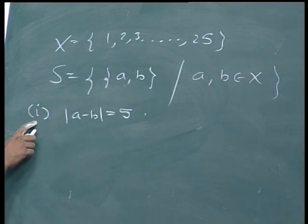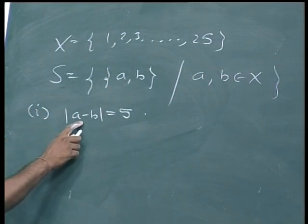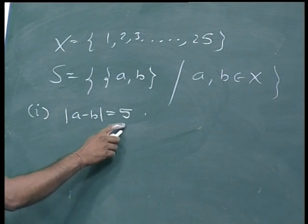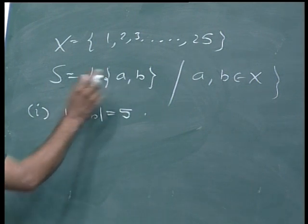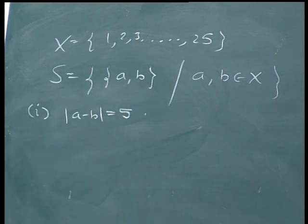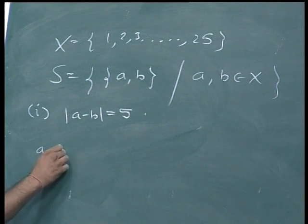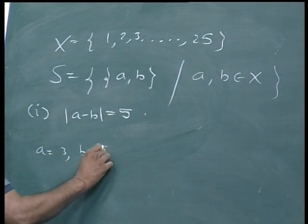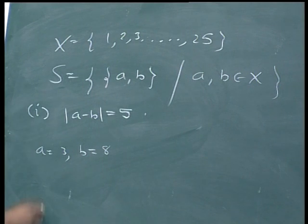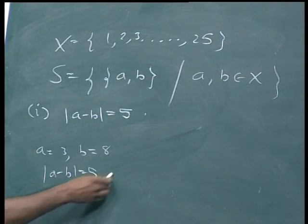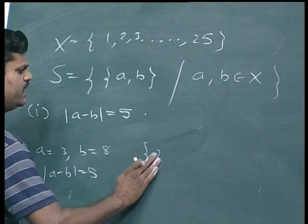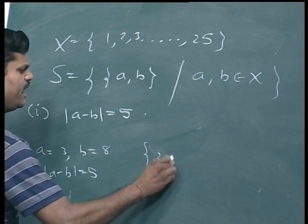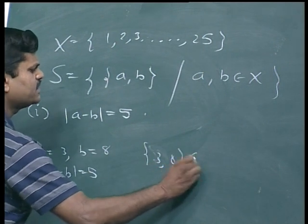For the first problem, the condition is mod of a minus b is equal to 5 — that is, the absolute difference between these two numbers is 5. For example, if I take a equal to 3 and b equal to 8, then mod of a minus b is 5, so I can take 3 and 8 in the set S.